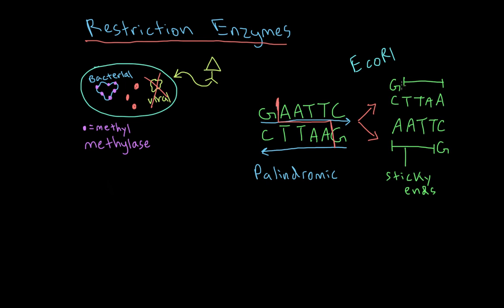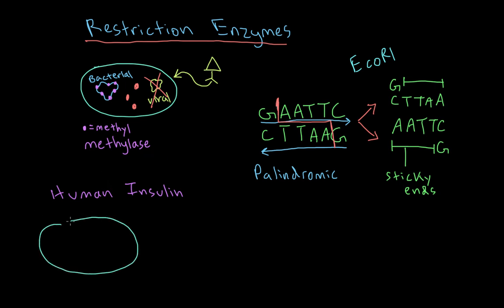We can take advantage of sticky ends and re-annealing for medicinal purposes. For example, suppose we want to synthesize human insulin. We start by taking bacterial DNA out of a bacterial cell. We then use EcoR1 to cleave the bacterial DNA at a specific site, creating a gap with sticky ends on both sides when the circular DNA is unrolled.